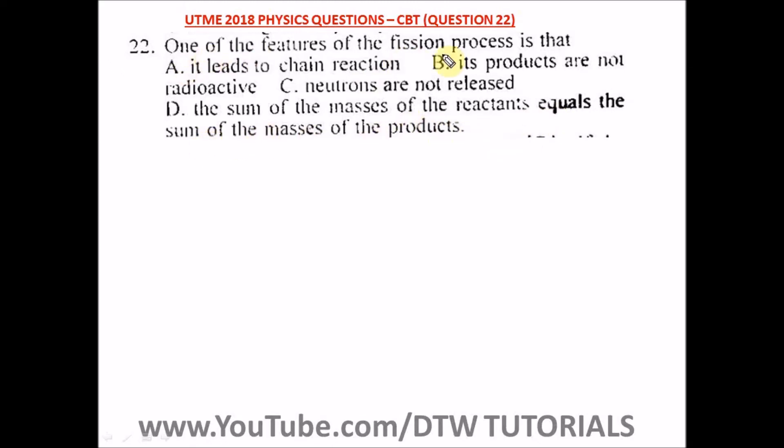So one of the features of a fission process is that it leads to a chain reaction. Okay, so you know during the fission process, the newly emitted neutrons could split more of the uranium nuclei.